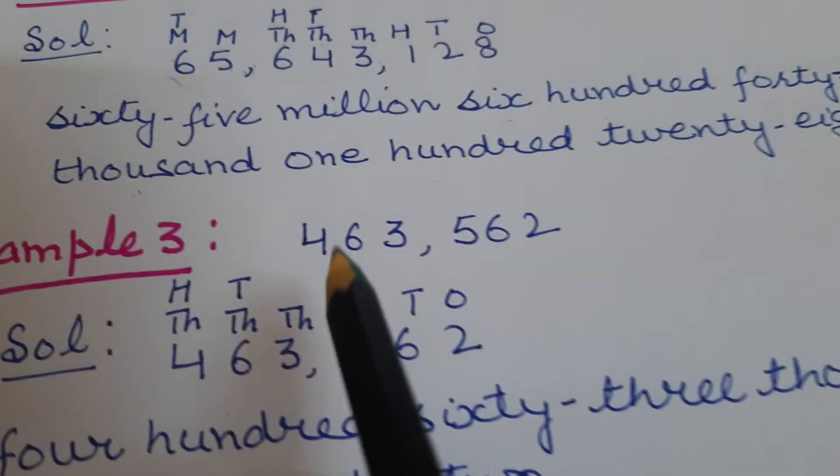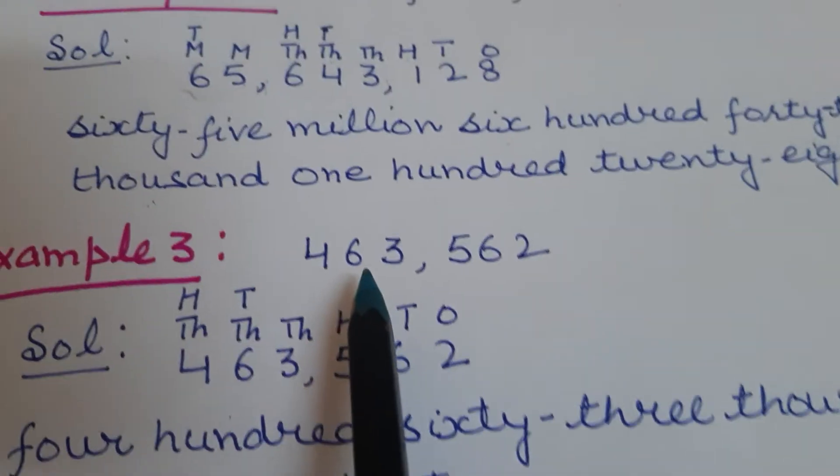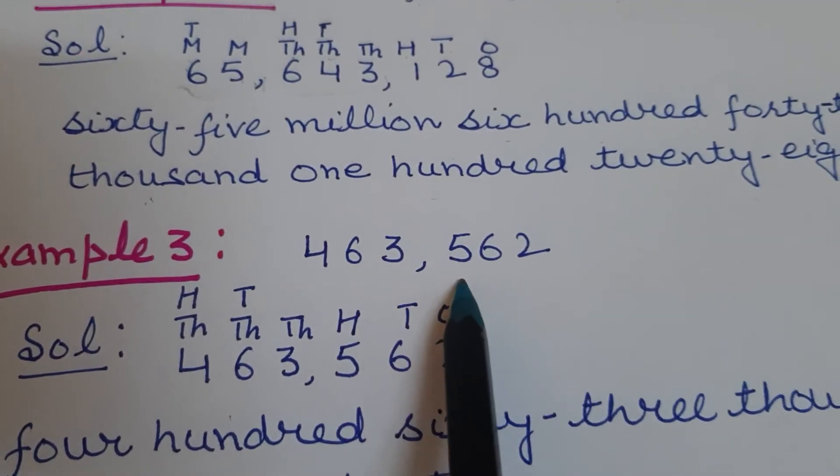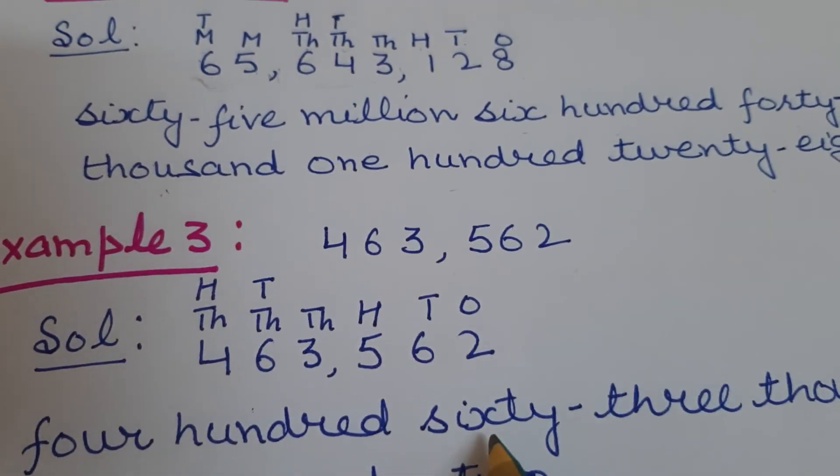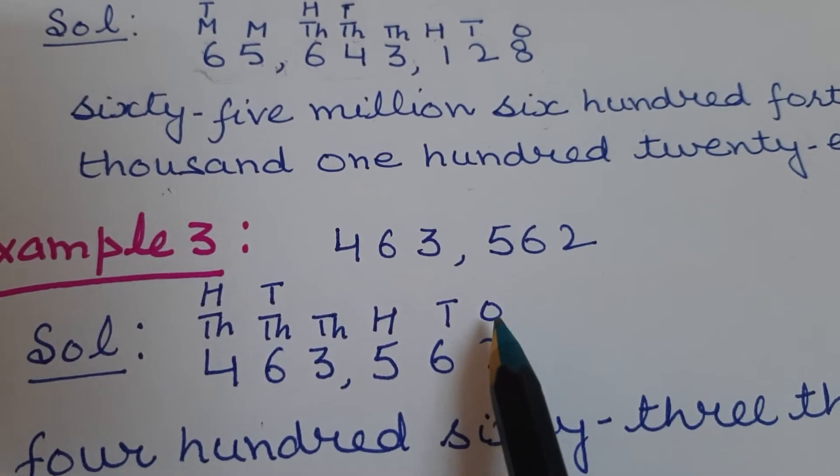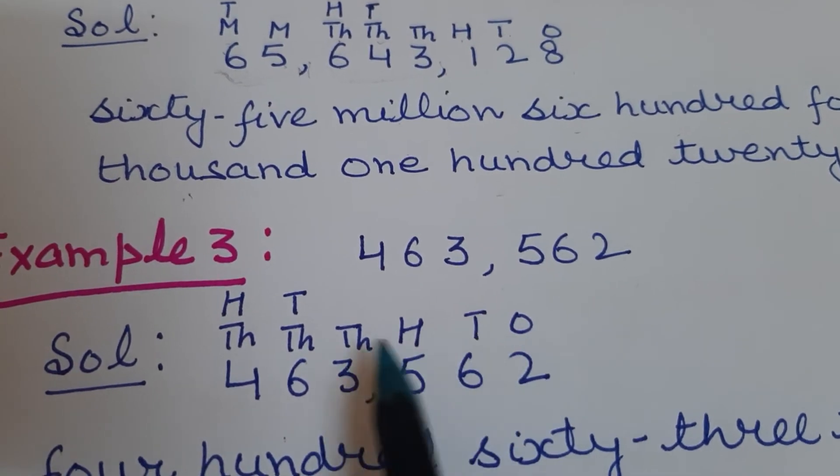Let's do one more sum. Next is 463,562. First write down places on each digit.